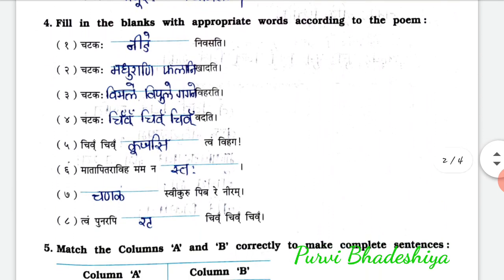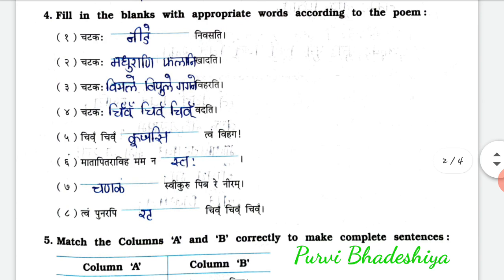Now exercise number 4: fill in the blanks with appropriate words according to the poem. 1st: Chattakah blank nivasati — answer is nide. 2nd: Chattakah blank khadati — answer is madurani falani. 3rd: Chattakah blank viharati — answer is vimale vipule gagane. 4th: Chattakah blank vodati — answer is chivu chivu chivu.